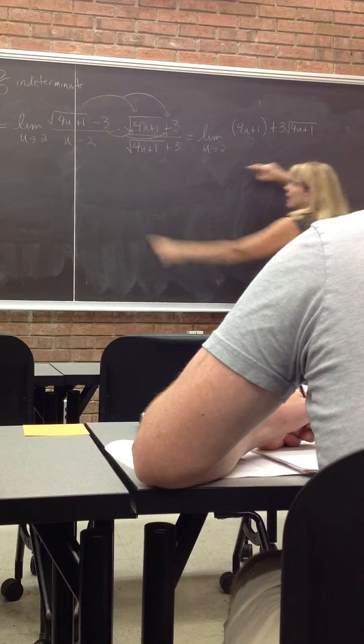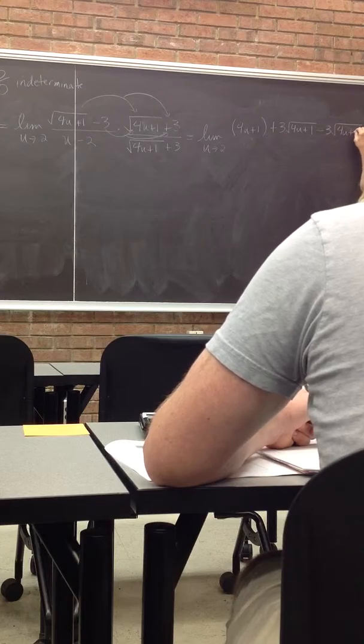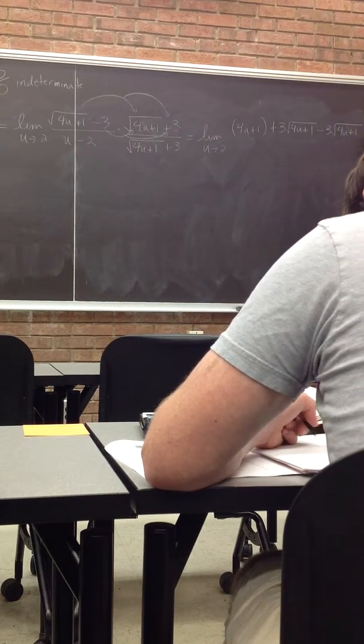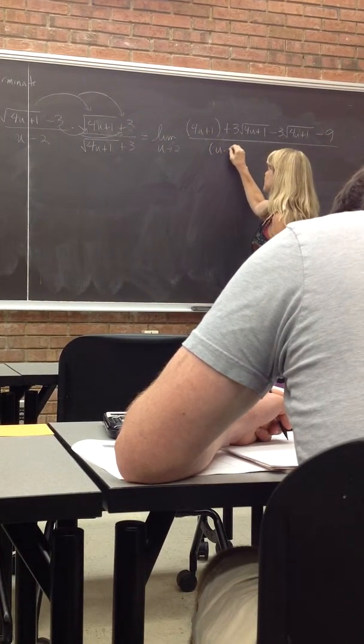But then I get minus 3 times the square root. And then negative 3 times positive 3 is negative 9. And the bottom I'm just going to leave...